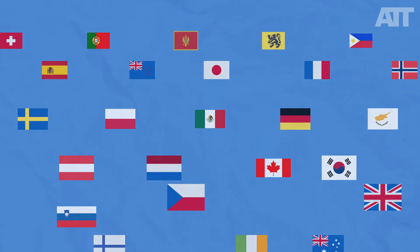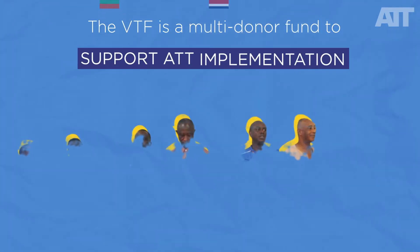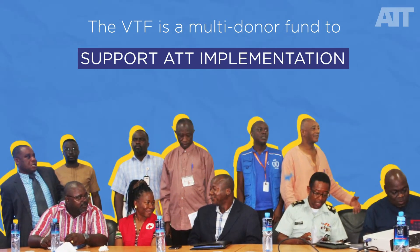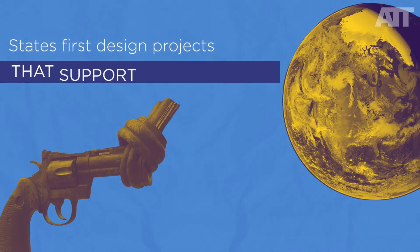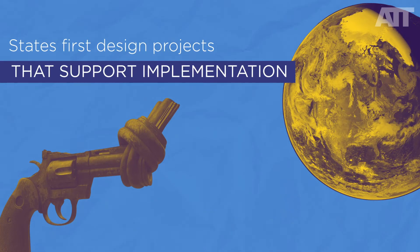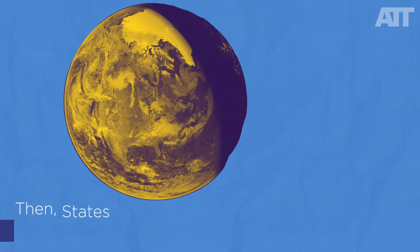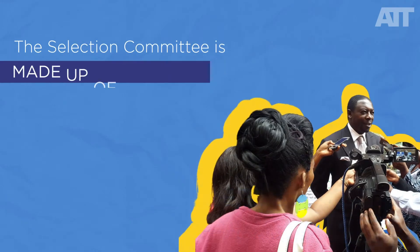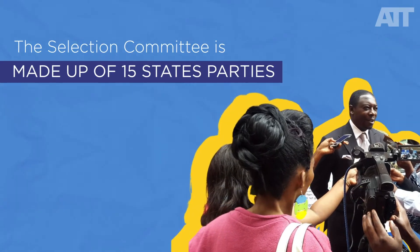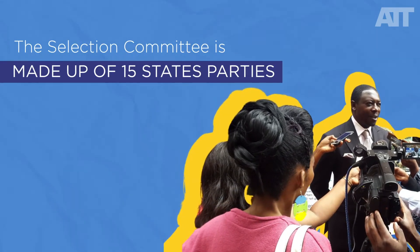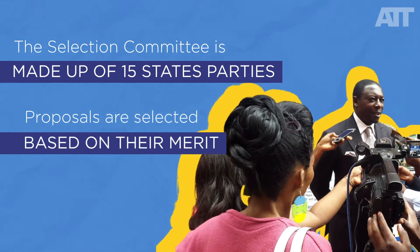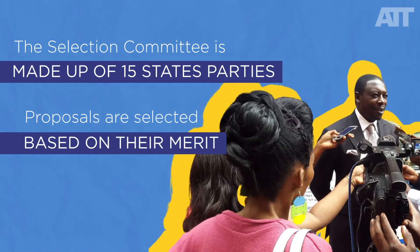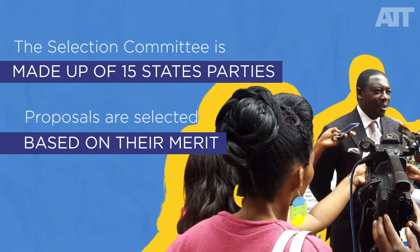The VTF is a multi-donor fund established to assist states in implementing the Arms Trade Treaty. States can design projects that will assist in their implementation of the treaty and submit them for consideration by the Selection Committee. The Selection Committee is made up of 15 states parties and, with the support of the ATT Secretariat, meets to select projects based on their merit.